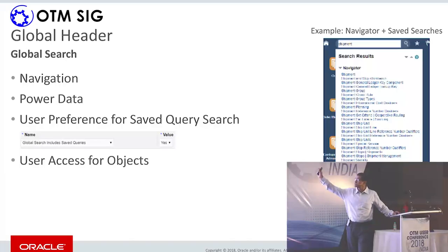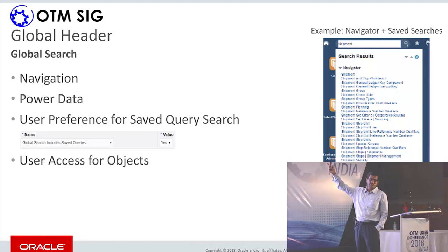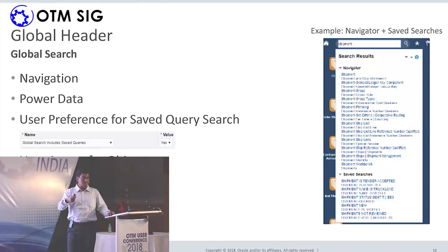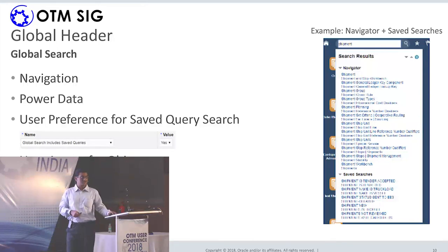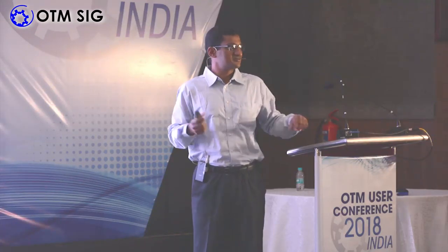Previously there was a search at the top. What we've added now is navigation search. As you can see, when somebody types just 'shipment,' we display all navigations related to shipment — buy shipment, sell shipment, shipment groups, and so on. These are the menu links you would typically drill down through. Now you can directly search by typing the description, which also surfaces hidden power data items you might not know about.